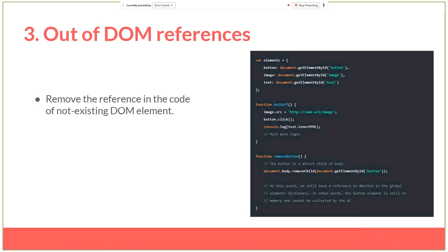In elements with nested structures like tables or lists of items with UL and OL tags, we have to pay additional attention. If we remove the parent element but have a reference to its children, the garbage collector will keep the whole reference to the whole item. If paired with big tables, this means a significant amount of memory that won't be available for future processes.